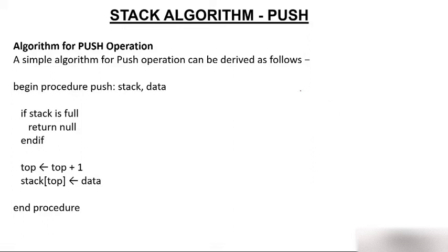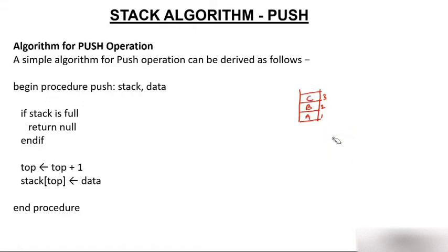Let's start with the algorithm of the stack. Before that, let's make a stack with positions one, two, and three. Before starting, there is no element in the stack, so the top value will be minus one, because if there is no value, top will be minus one. If starting from zero, top is minus one; if starting from one, top can be zero — one value less than the starting value. For the push algorithm, if the stack is full, top will point to the highest location.